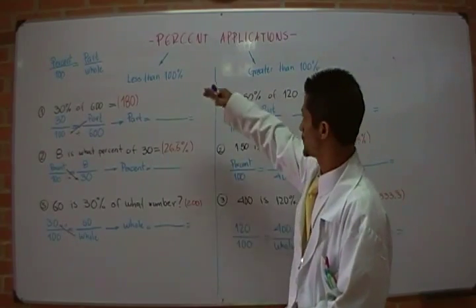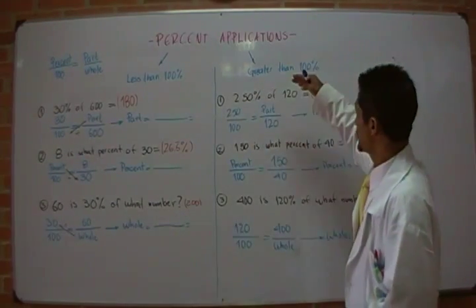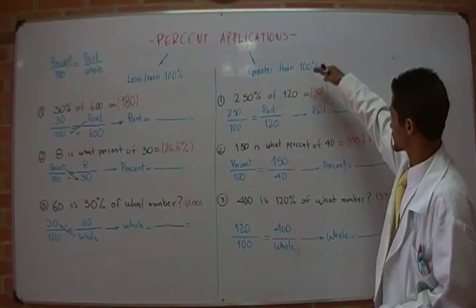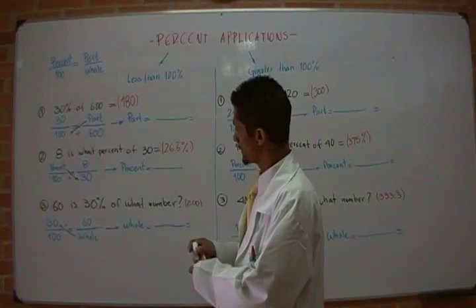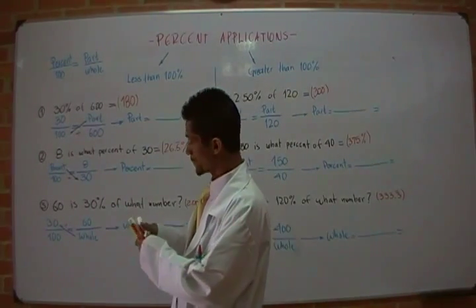We have different kinds of problems for percents that are less than 100, and similar problems for percents greater than 100. In this case, 30% of 600, substituting the right values in this proportion.